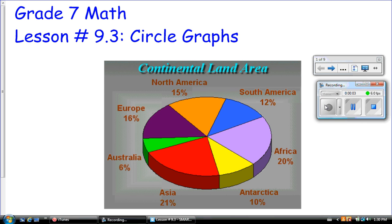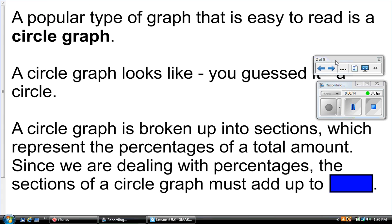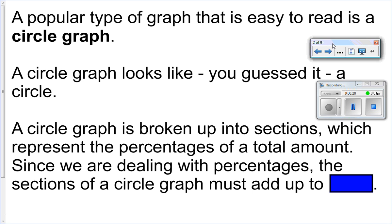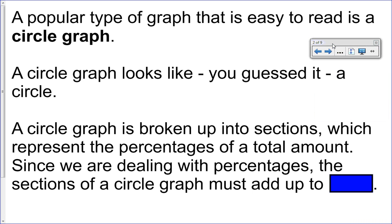Welcome back to Grade 7 math, this is lesson number 9.3 circle graphs. A popular type of graph that is easy to read is a circle graph. A circle graph looks like, you guessed it, a circle. A circle graph is broken up into sections which represent the percentages of a total amount. Since we are dealing with percentages, the sections of a circle graph must add up to, that's right, 100 percent.